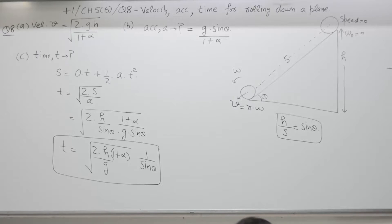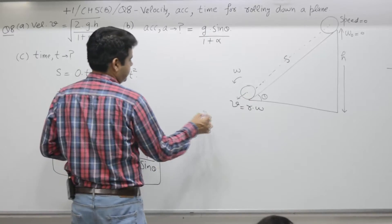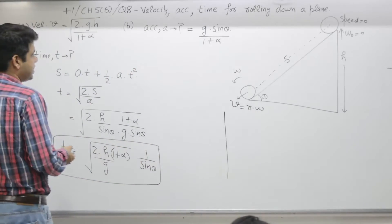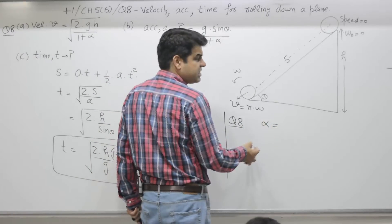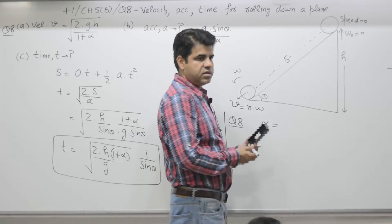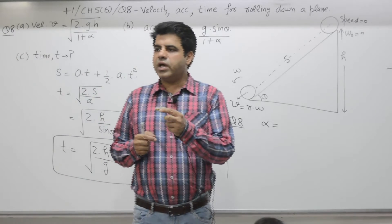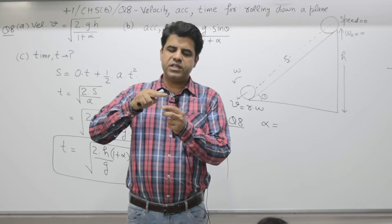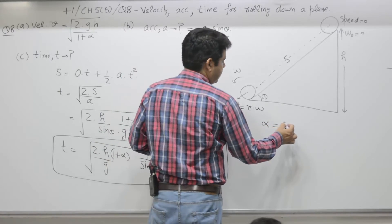For question number 8, the object is a solid cylinder. For a disc, the moment of inertia is (1/2)mr², and if you stack discs over each other, it becomes a solid cylinder. So for a disc and a solid cylinder, the moment of inertia is the same: α = 1/2.